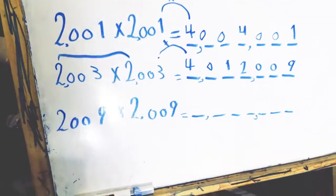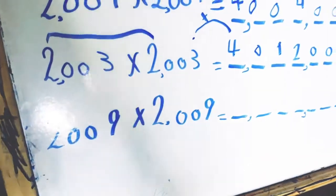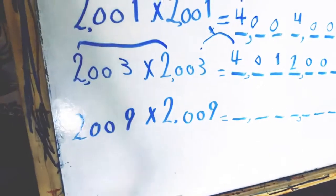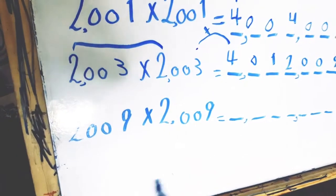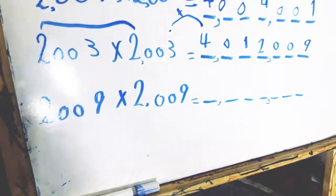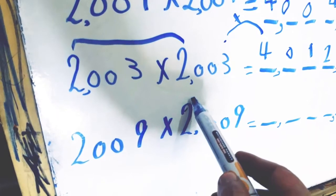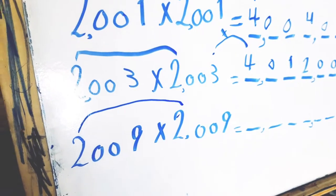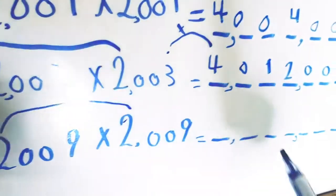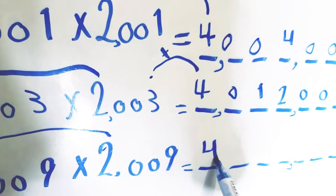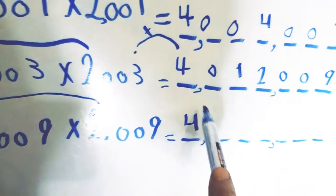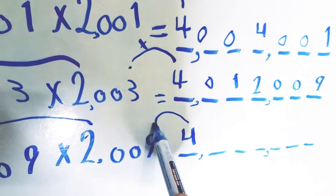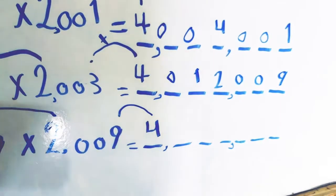Let's conclude with this example. Two thousand and nine times two thousand and nine — we square 2009. The first step: we multiply the first digit by itself, so 2 times 2 equals 4. The product 4 must be multiplied by the last digit.